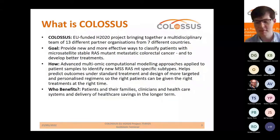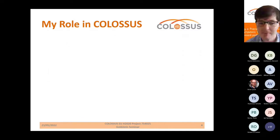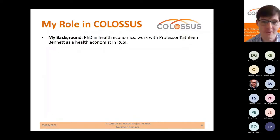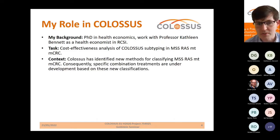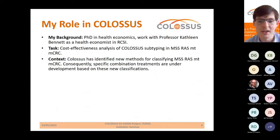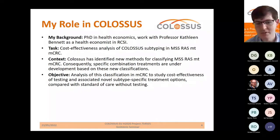This helps predict how patients will perform under standard of care and in more targeted, personalized regimens — giving the right treatments to the right patients at the right time. The beneficiaries are patients and their families first and foremost, but clinicians and healthcare systems will also benefit from healthcare savings. In terms of my own role, I have a PhD in health economics and work with Professor Kathleen Bennett as a health economist at the Royal College of Surgeons in Ireland, considering the cost effectiveness of Colossus subtyping in microsatellite-stable RAS-mutant metastatic colorectal cancer.